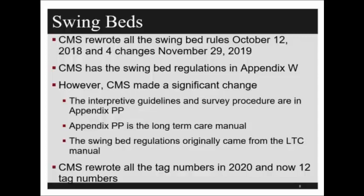The swing beds tend to overlap into long-term care facility type services. CMS put the regulations into Appendix W, which is for critical access hospitals, but then put the interpretive guidelines and the survey procedures in Appendix PP, which is for long-term care. This is quite confusing — there were almost 300 pages of changes. The swing bed regulations did originally come from the long-term care manual.